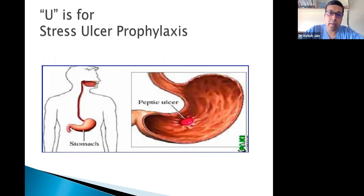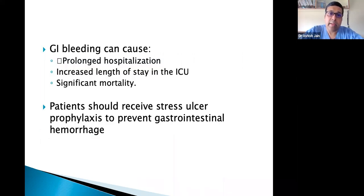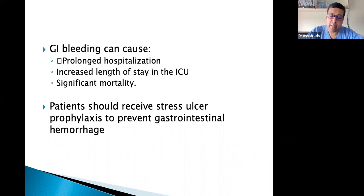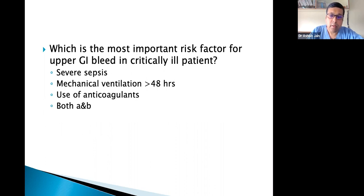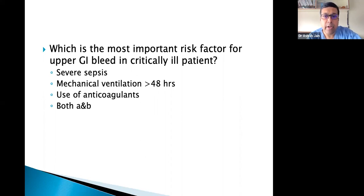U is for stress Ulcer prophylaxis. All ICU patients should receive stress ulcer prophylaxis because GI bleeding causes prolonged hospitalization, increased ICU length of stay, and significantly increased mortality. Question: what is the most important risk factor for upper GI bleed in a critically ill patient — severe sepsis, mechanical ventilation for more than 48 hours, use of anticoagulants, or both A and B?